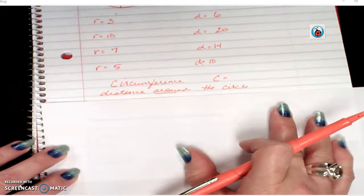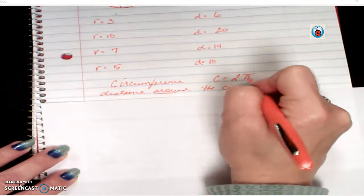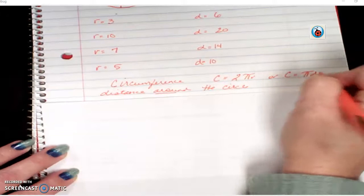And you would find that using circumference is 2 pi r or circumference equals pi d.